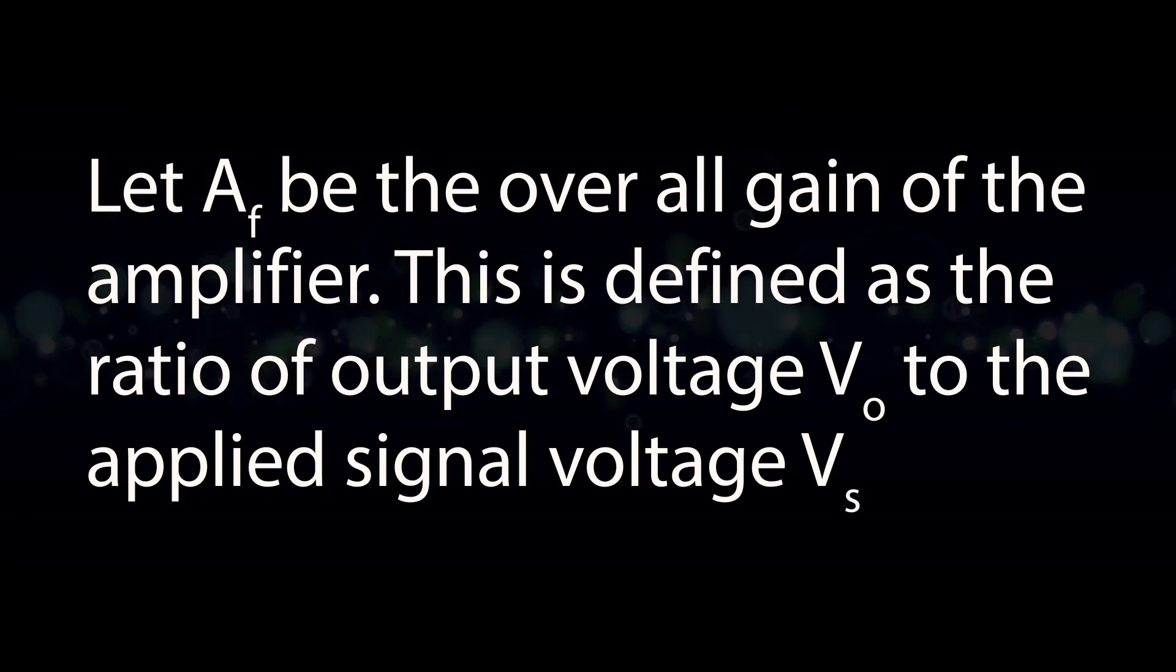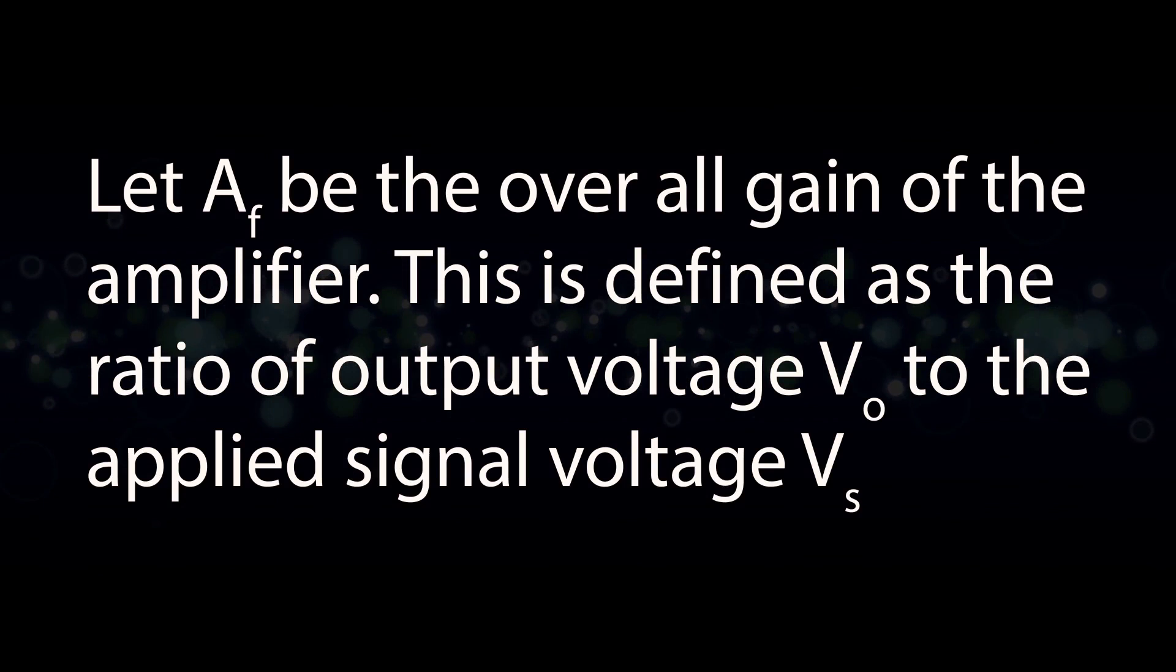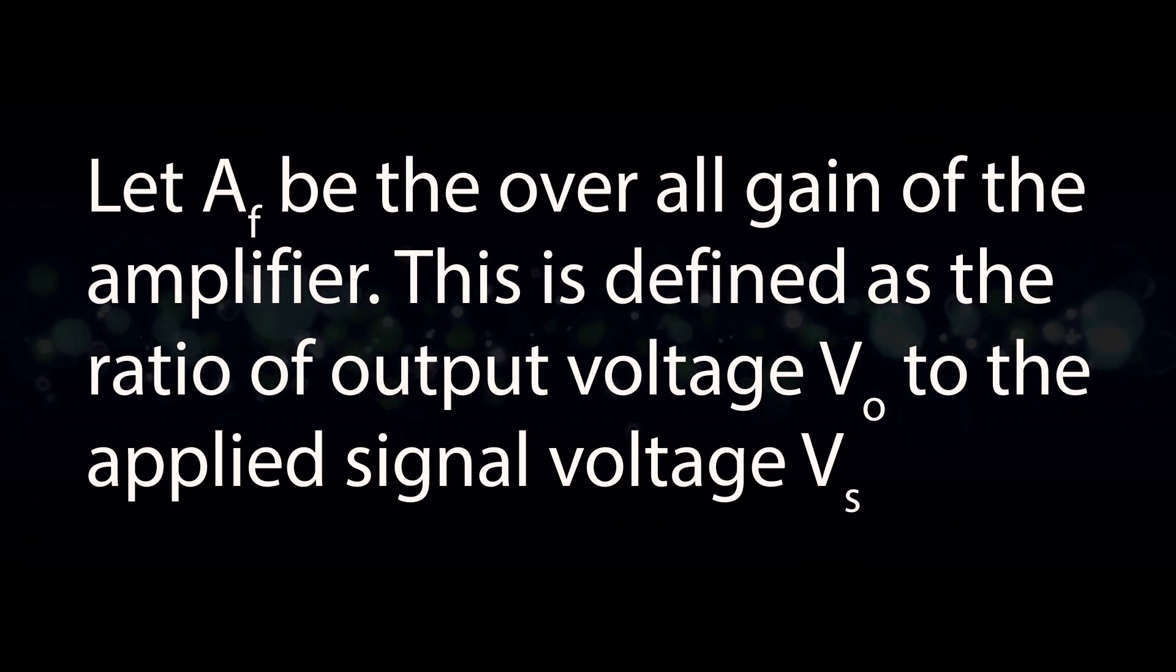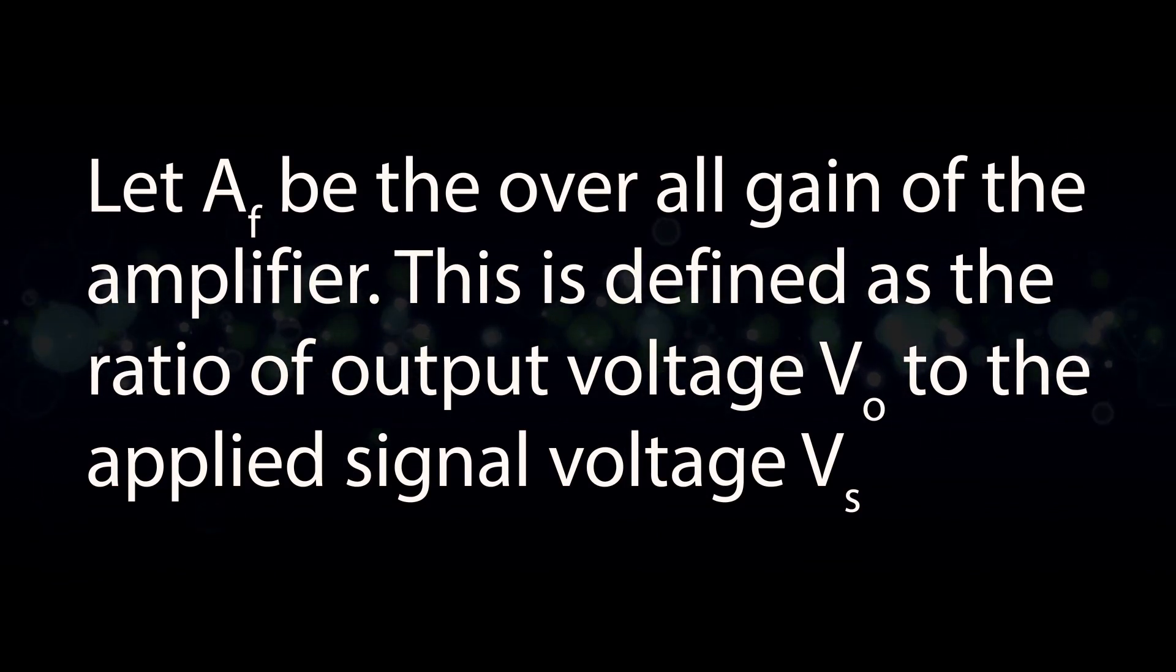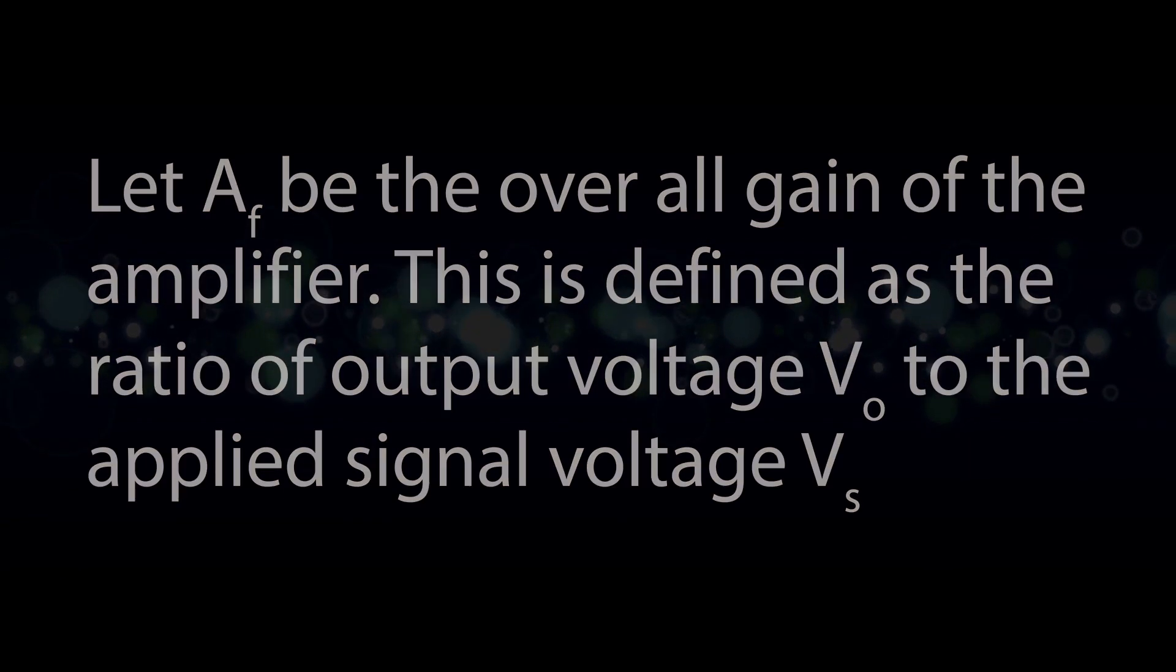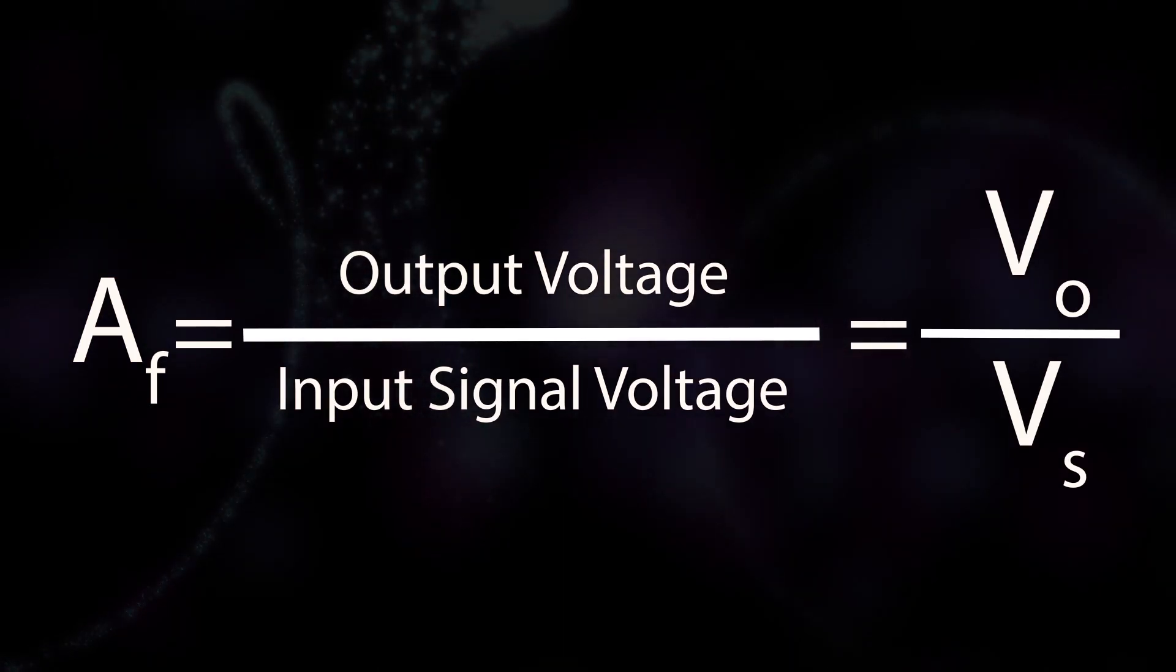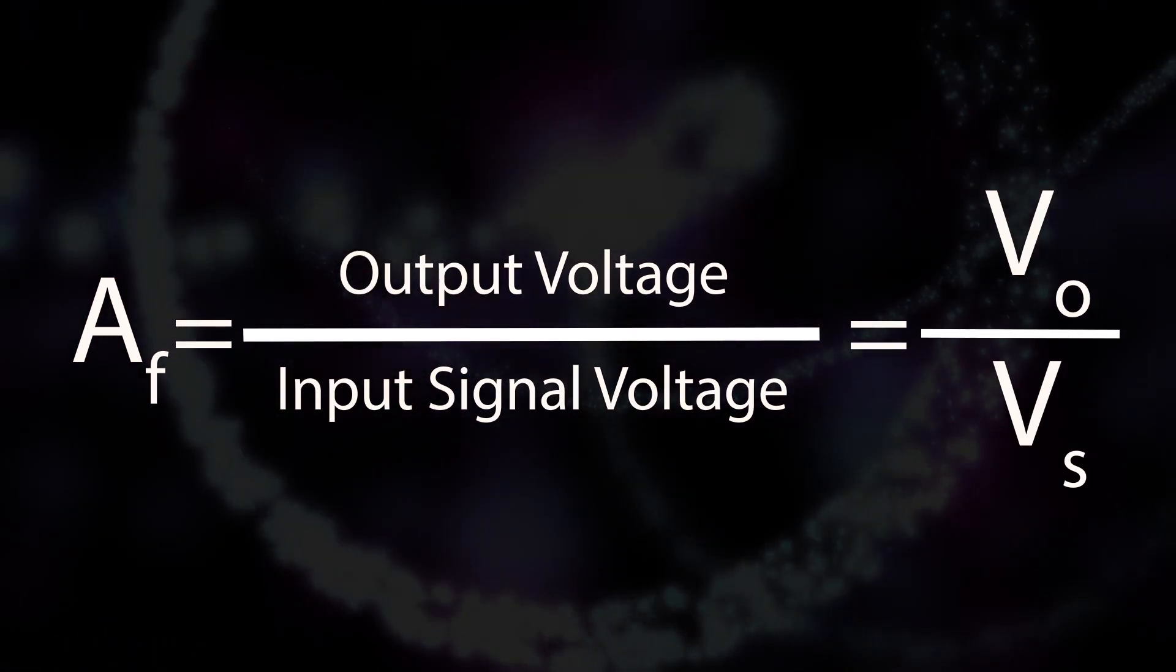Let AF be the overall gain, that is, gain with feedback of the amplifier. This is defined as the ratio of output voltage Vo to the applied signal voltage Vs. So, AF equals output voltage by input signal voltage equals Vo by Vs.